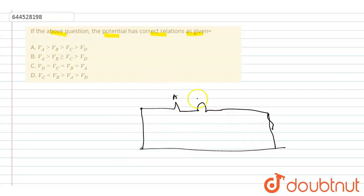This is point A, this is point B, this is point C, and this is D. And we know charge density of pointed surface is more than less pointed part.